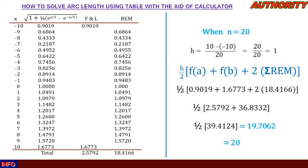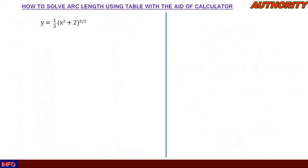Now let's look at problem number two. We have y = (1/3)(x² + 2)^(3/2) on the interval from x = 6 to x = 8. We need to find f′(x) by differentiating this function.